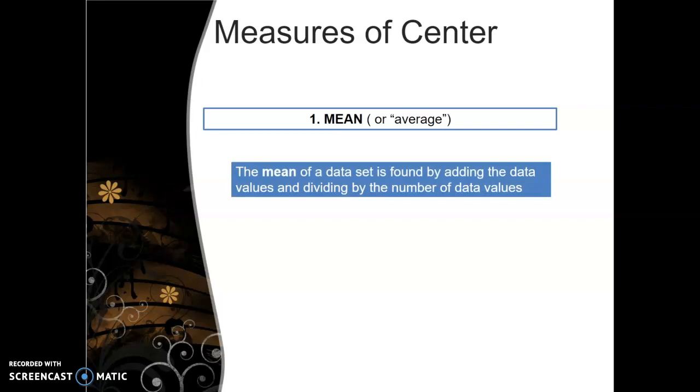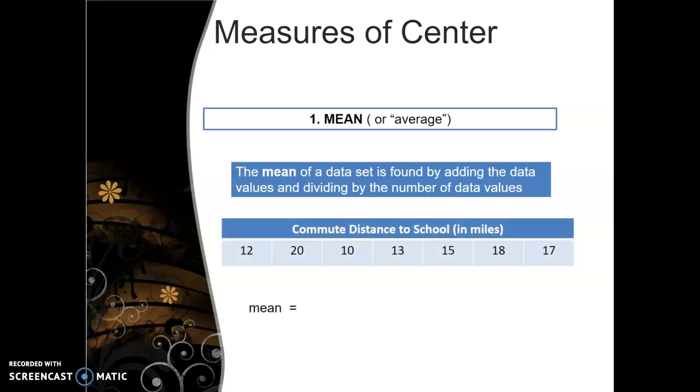And the mean of the dataset is found by adding the data values all together and then dividing by the number of data values. So if I'm looking at seven faculty members in my department, and we're all describing our commute to school, the commute distance to school in miles. We have, let's say, 12 miles, 20 miles, 10, 13, 15, 18, and 17 miles. Then the mean of that dataset will be found by adding all the values together and dividing by the seven total faculty members.